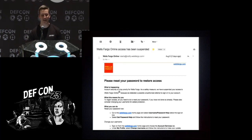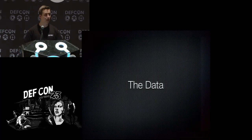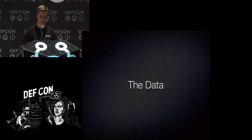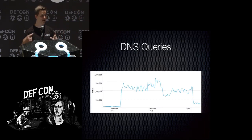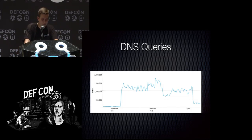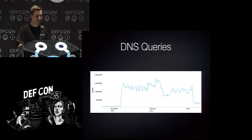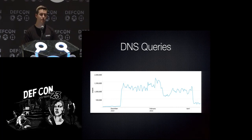Moving onto the data — the part you're probably actually here for. The first question people ask is: is this actually even a problem? Is there even traffic to these bit flips? I received over a million DNS queries every 24 hours for over a month. The graph is all over the place for various reasons: different servers caching results for different durations, and I transferred some domains away over time, making it not the cleanest dataset.